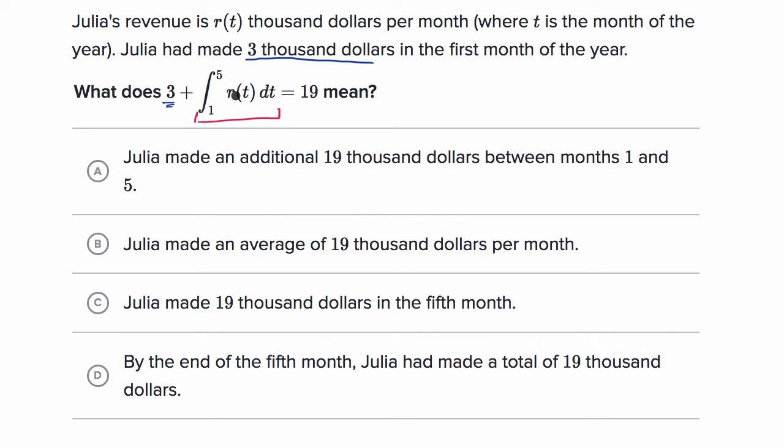This is the area under this rate curve. r(t) is the rate at which Julia makes revenue on a monthly basis. So if you take the area under that rate curve, that's going to give you the net change in revenue from month one to month five, how much that increased.